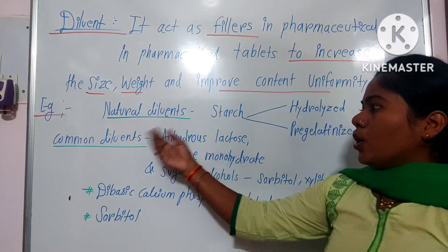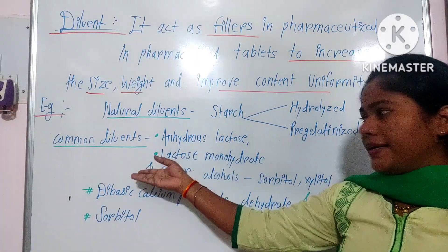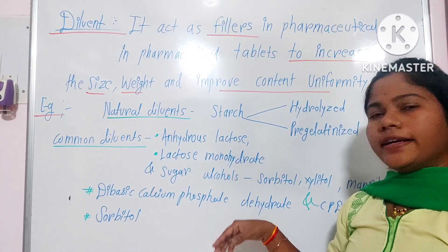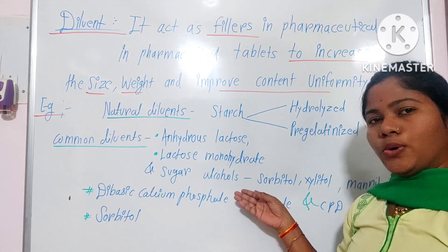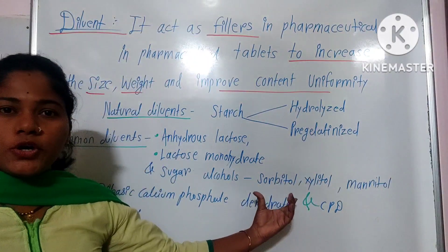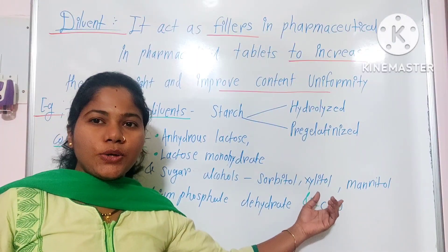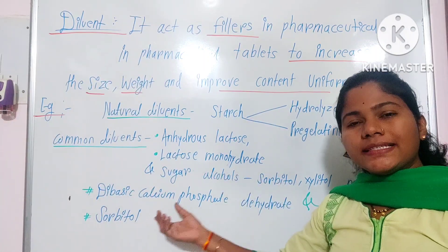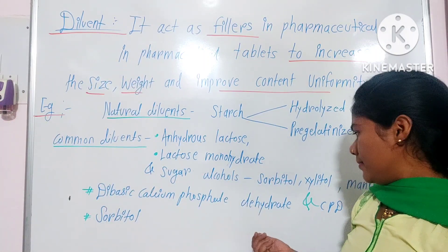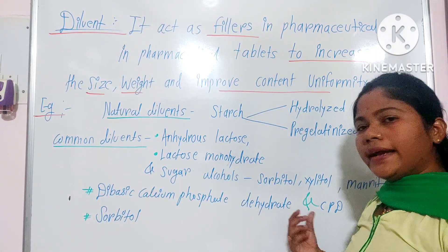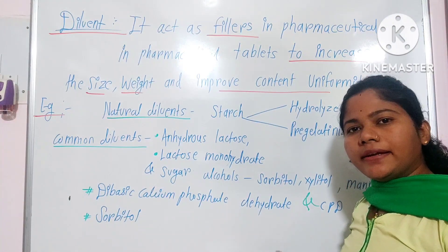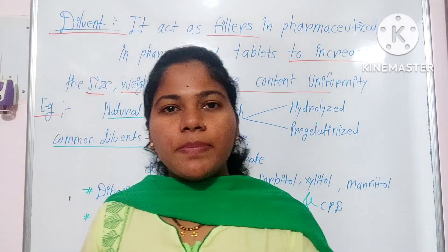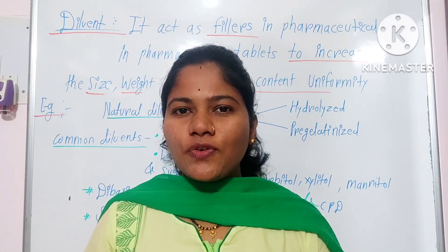A few examples of diluents: natural diluents like starch, which may be hydrolyzed or pre-gelatinized. Common diluents include anhydrous lactose, lactose monohydrate, and sugar alcohols such as sorbitol, xylitol, and mannitol. Also dibasic calcium phosphate dihydrate and calcium phosphate dihydrate.